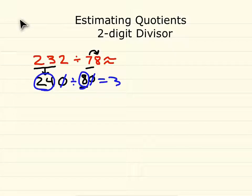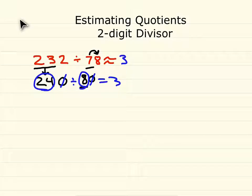Because of that, boys and girls, the estimated answer for 232 divided by 78 is about 3, and we have our estimated quotient. It's very important to just think of numbers that are compatible and be able to do these problems in your head. Thank you for watching my video on estimating quotients with two-digit divisors. Please look at my other videos for other math help.